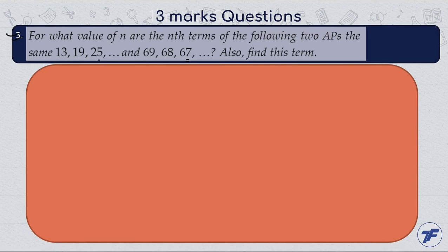Also find this term. Here we have given two APs. Let the first be 13, 19, 25, and so on - this is an AP. And the second is 69, 68, 67, and so on - this is also an AP sequence.